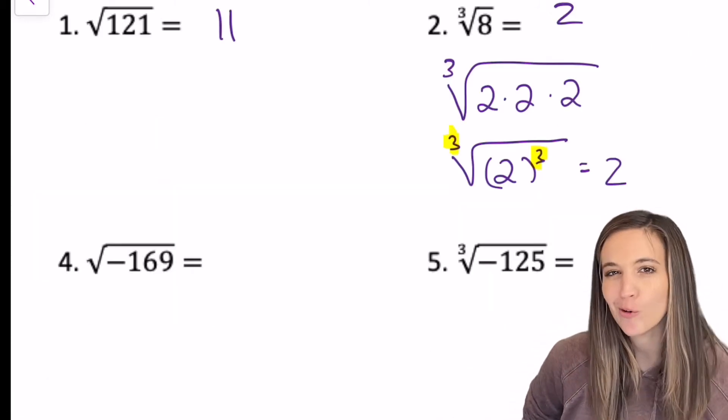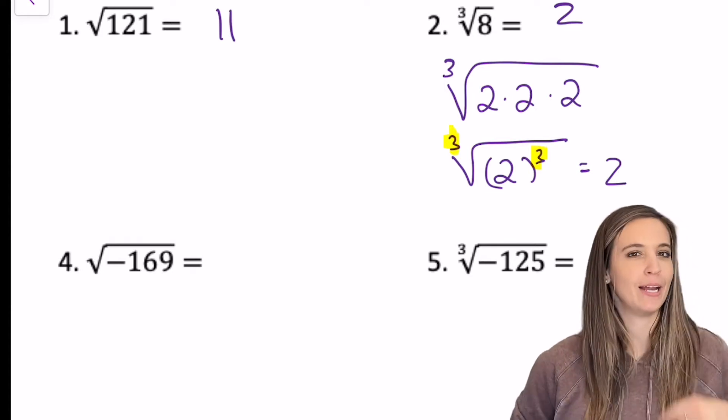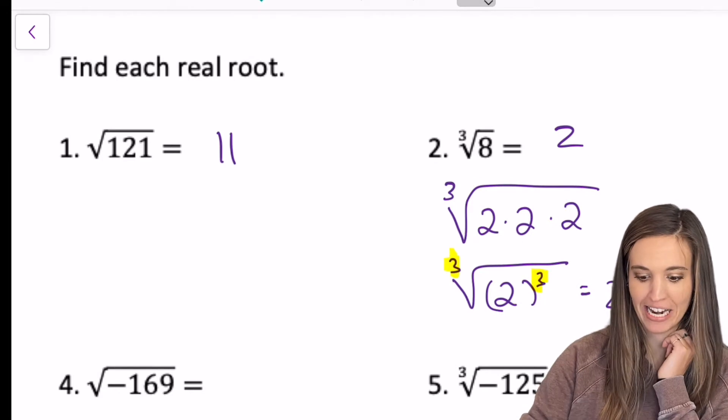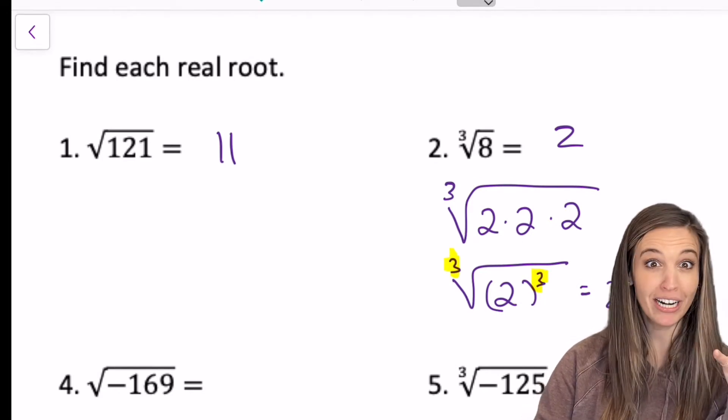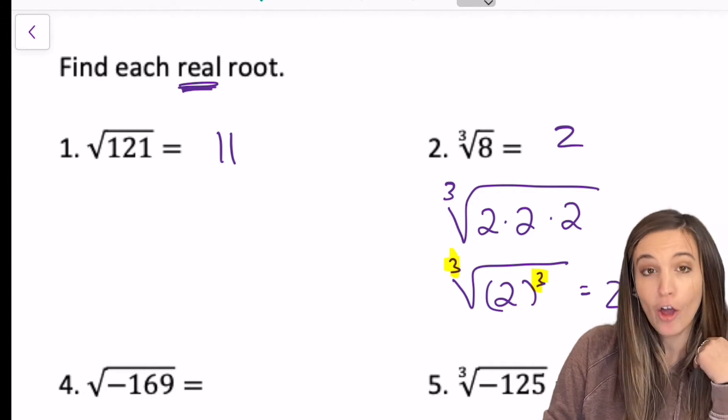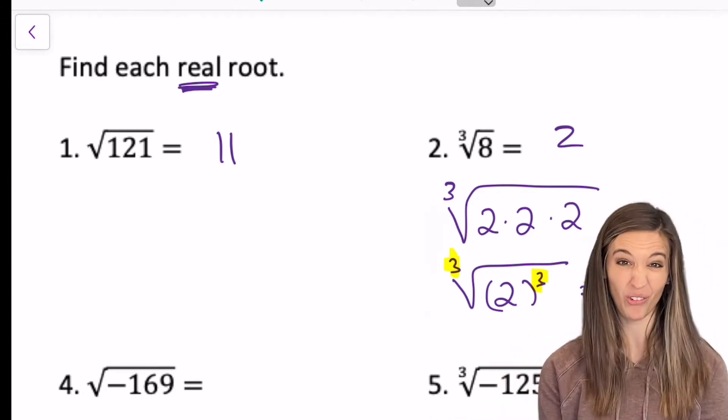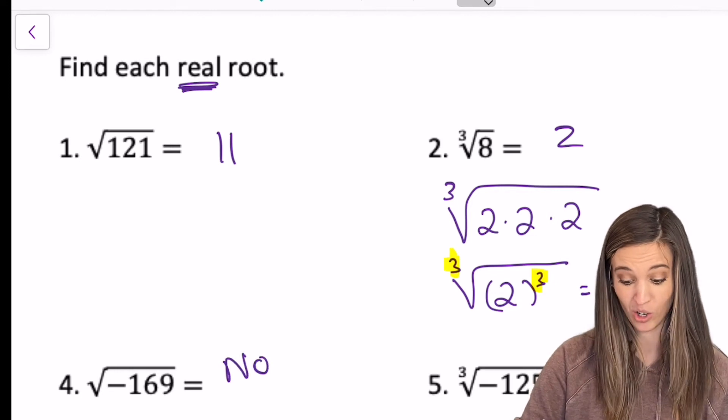The next one, the square root of negative 169. Be careful here. This is the square root of a negative. So what does that cause? An imaginary number. Well, this asks for the real root. It was specific. So there isn't a real root. So I'm just going to say no real root.